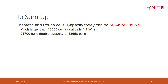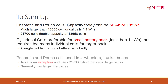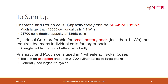To sum up: prismatic and pouch cells have larger capacity — 50 AH or 185–200 Wh — much larger than the 18650 at 11 Wh. The 21700 doubles capacity to about 22 Wh, but still 22 Wh versus 200 Wh. For a large pack, go for pouch or prismatic cells; for smaller packs, cylindrical cells work. For 4-wheelers, trucks, and buses, use prismatic or pouch. But remember — Tesla has defied this and gone with 21700 cells at 22 Wh to make very large packs.